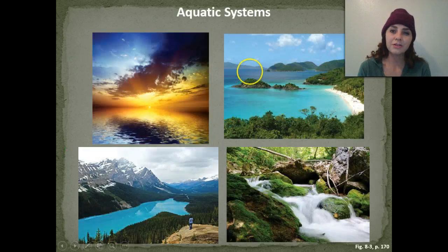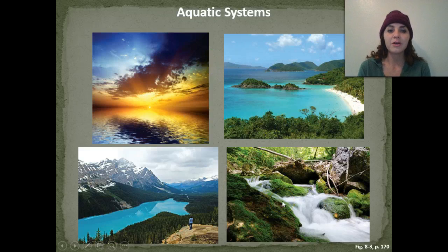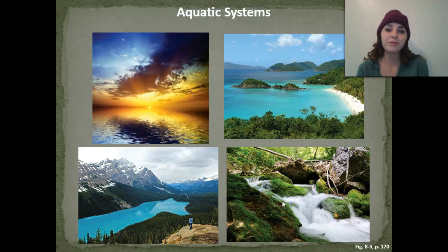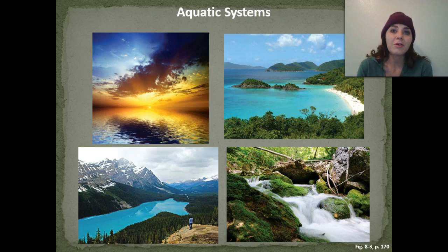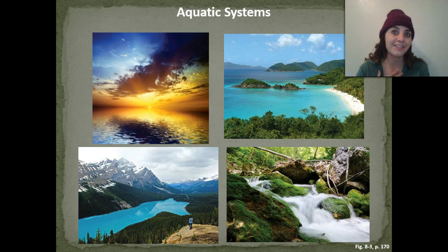These are a couple of pictures of different types of aquatic systems — we have beautiful lakes, rivers, and the ocean. Very pretty ecosystems are usually involved with aquatic ecosystems, at least I like to think so.